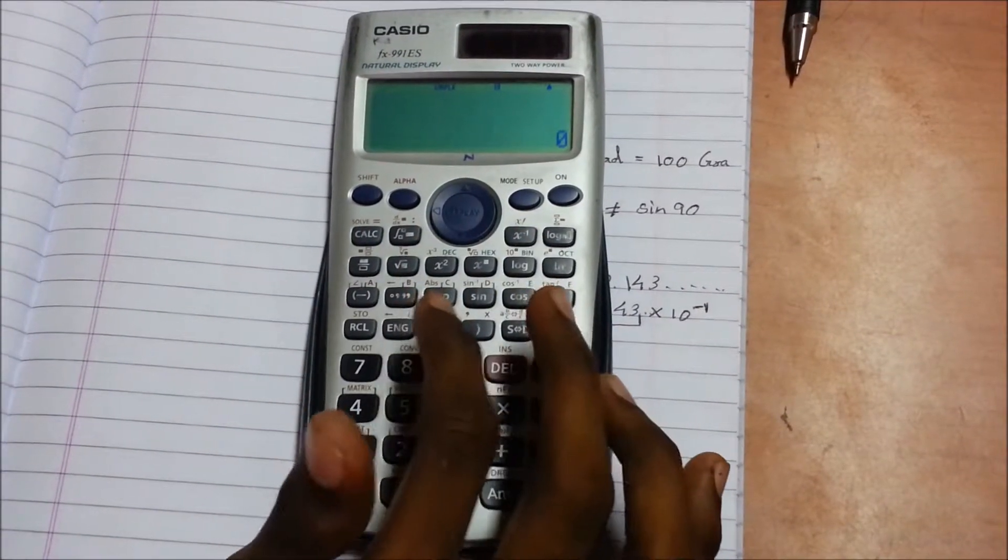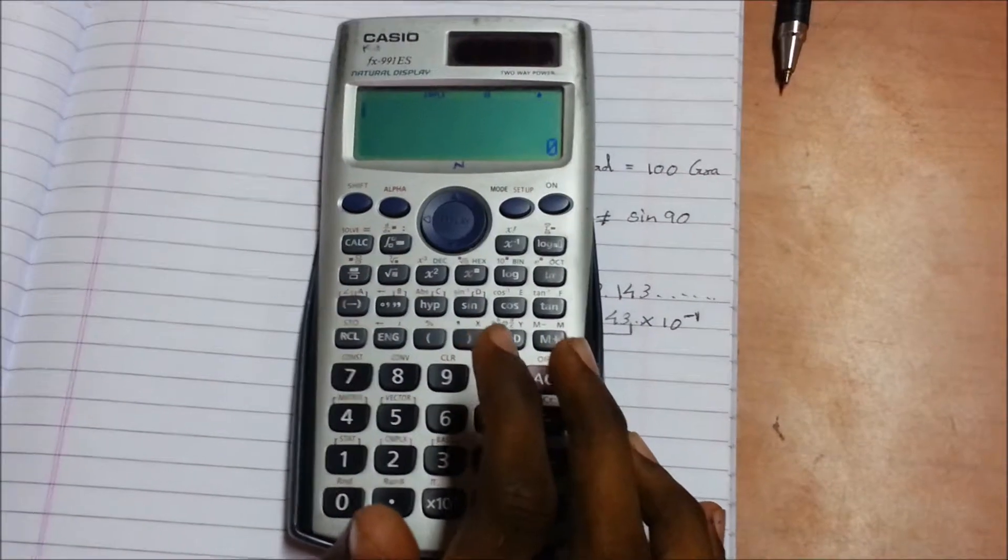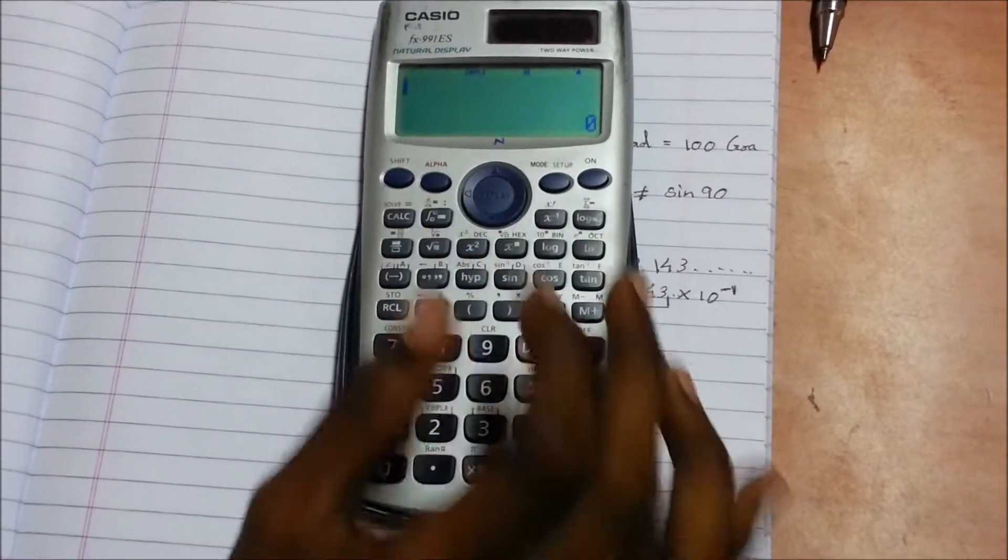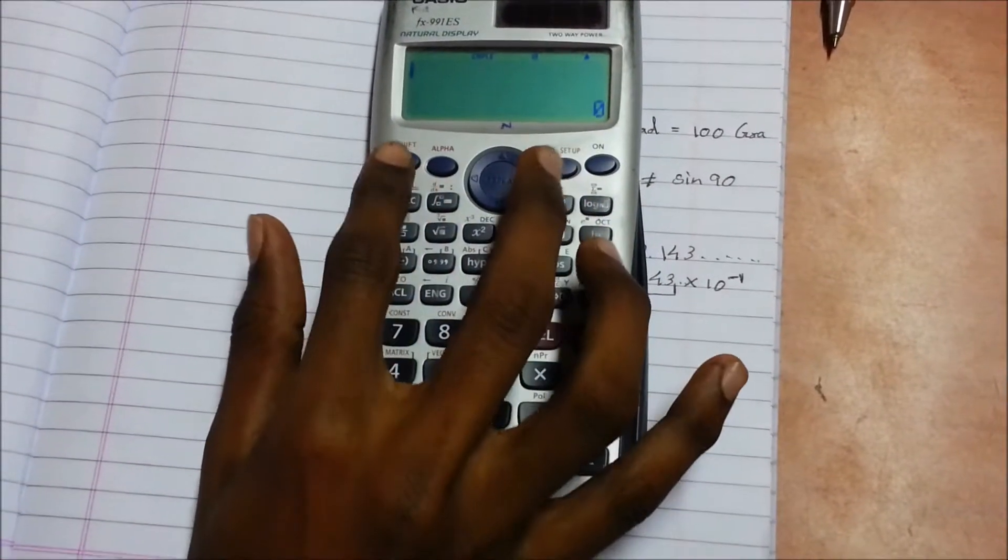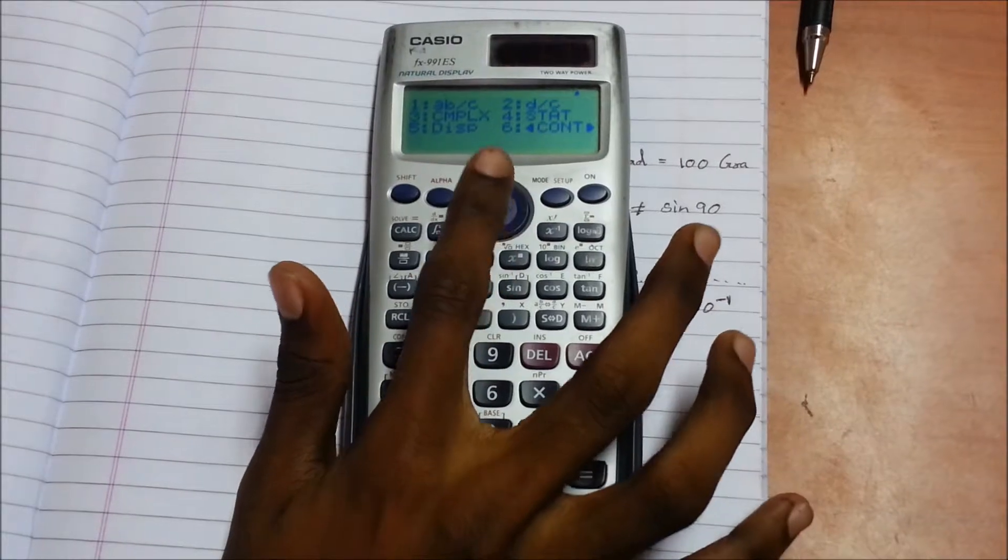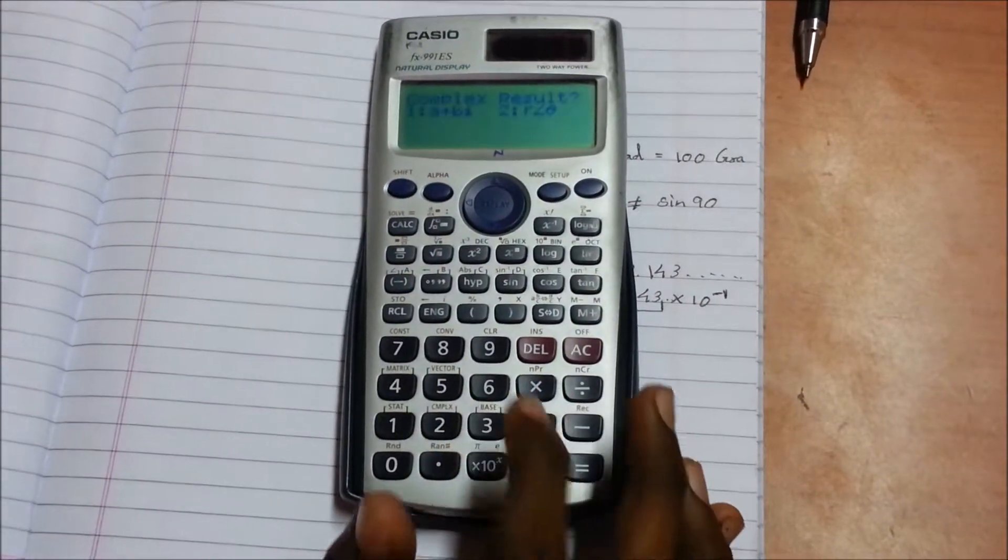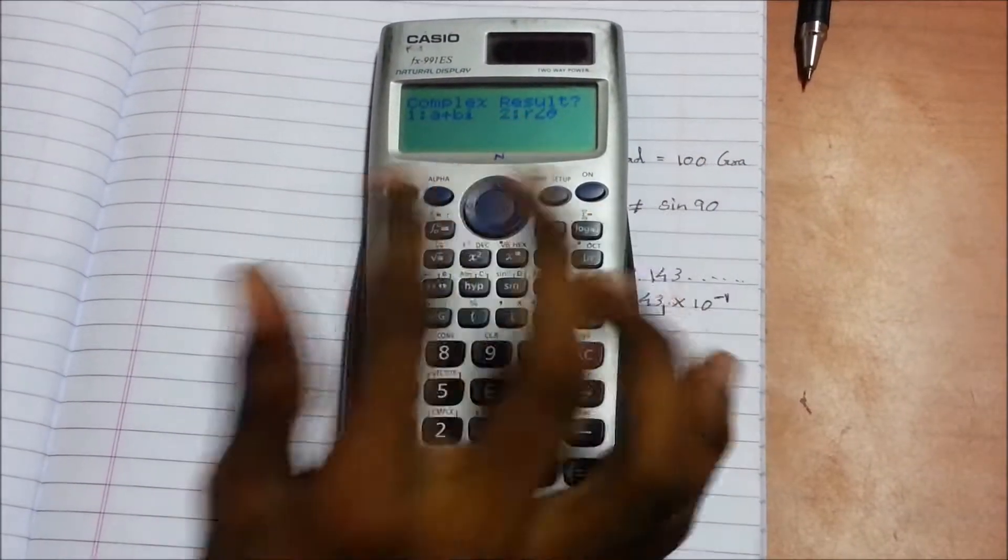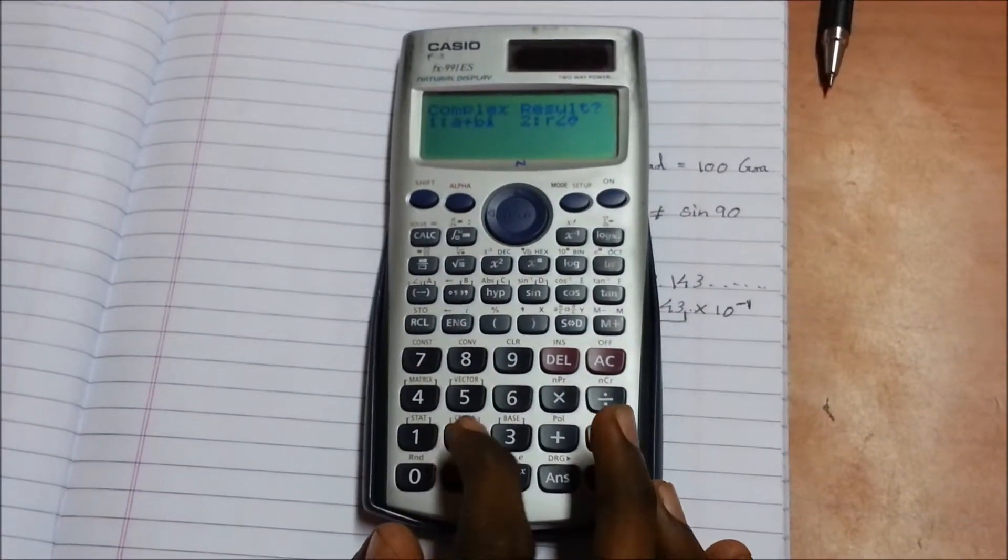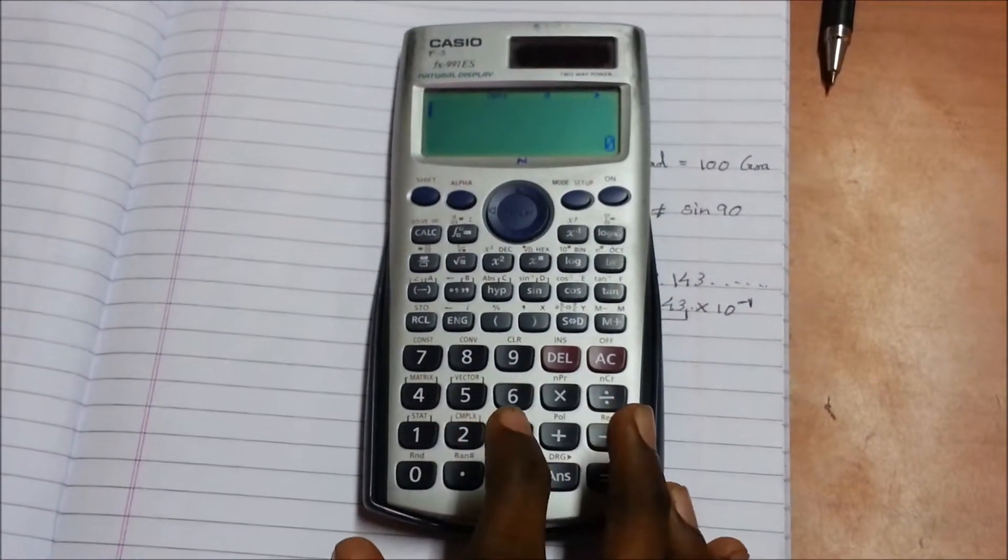And r angle theta is called the polar format. We will change the function, change the setup by pressing shift mode, down arrow, and 3 for complex. Here we will choose the result as 2, that is r angle theta. OK.